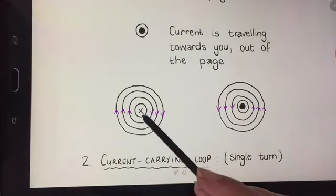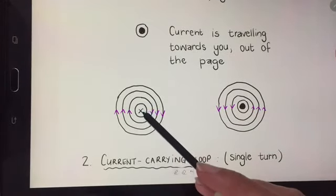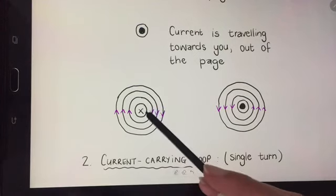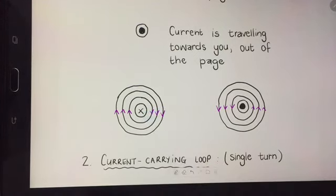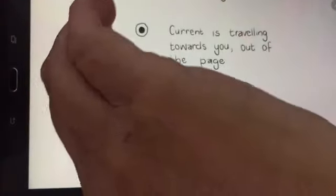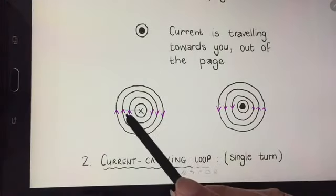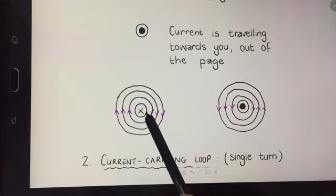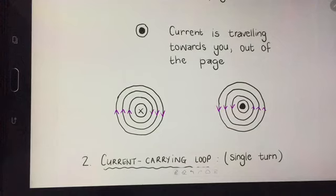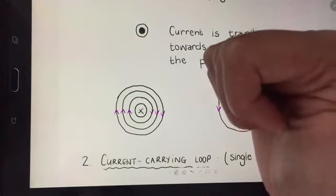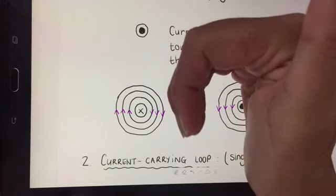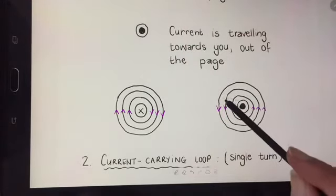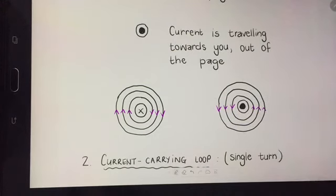Over here, the cross-section through the wire shows the current is flowing away from me, so if my thumb points away from me into the paper, my curled fingers will give the direction of the magnetic field. On this side, the circle shows the current is flowing towards me, so my thumb points up, the curled fingers give the direction, and that is the direction of the magnetic field on this side.